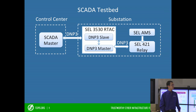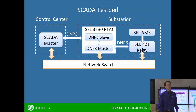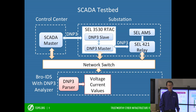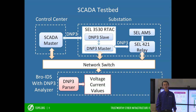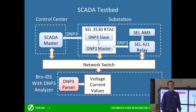Both of these communications are performed independently. In error-free operation, the measurement data carried by these two communications should be consistent with each other. In this lab configuration, we connect the SCADA master, RTAC, and relay into a network switch. We deployed our Bro IDS with the DNP3 analyzer on a separate laptop, and we connect this laptop to the network switch so we can monitor the traffic transmitted on both of these communications.